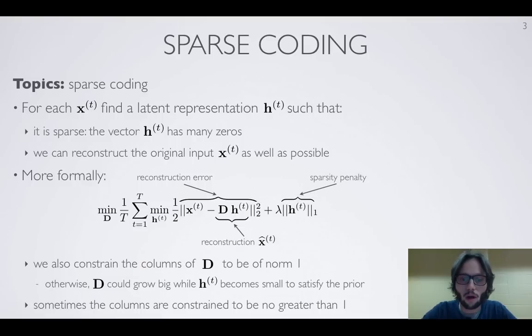We also want that latent representation to be sparse. So because of this, we'll penalize the L1 norm of the latent representation. We've seen before that the L1 norm actually will force certain elements to be exactly zero. So we'll achieve our goal of getting a latent representation which contains many zeros.